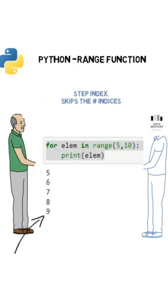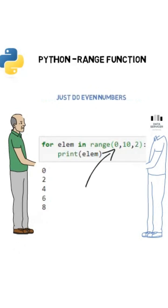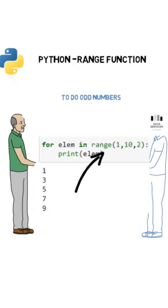If we want to do a step index, say if we want to consider only even numbers, then we do range(0, 10, 2). So 2 is the step index, and even numbers are printed. But if we change the start index to 1 and do the step of 2, the odd numbers will be printed.